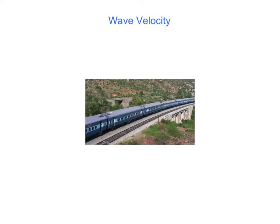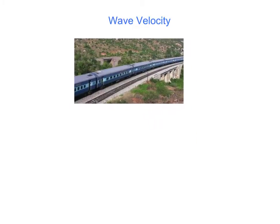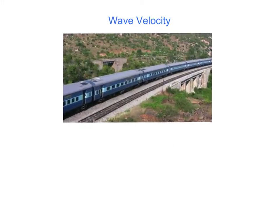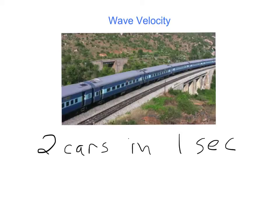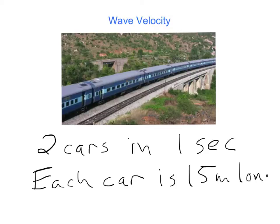Let's talk about trains. Look, there's a train. As I'm watching this train whiz by, I happen to notice that two cars go by in one second. I also happen to notice that each car is 15 meters long. Using those two facts, I want to figure out how fast this train is moving.